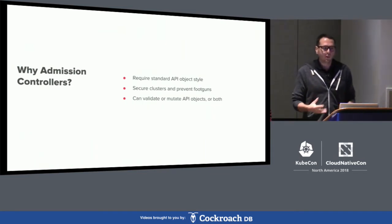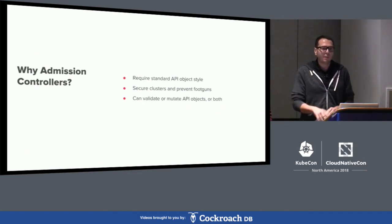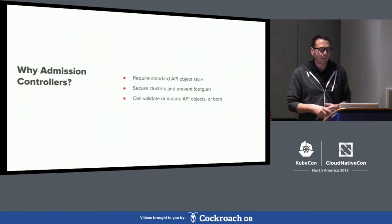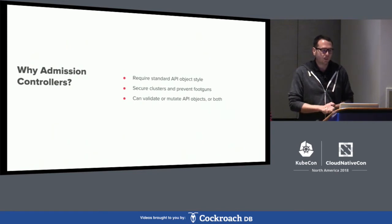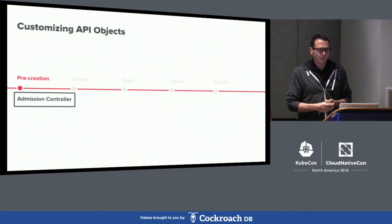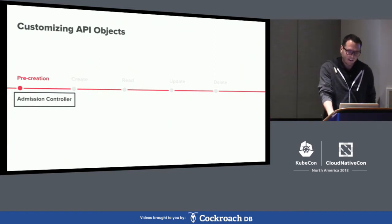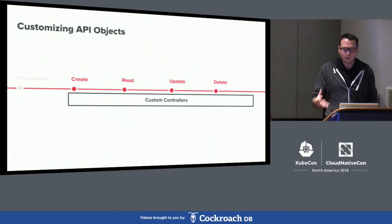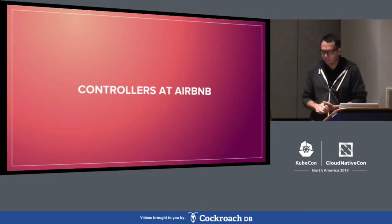Another thing we use admission controllers for is securing our cluster. For example, someone could try to deploy something from the internet to create service accounts and things like that, so we use the validating admission controller to prevent those things from happening. The admission controller operates before the object gets persisted or created. Custom controllers, on the other hand, operate after those steps. I'll now hand over to Steven to talk about our specific use cases.